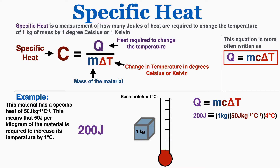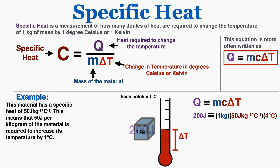If we add 200 joules to just 1 kilogram of this material, that's 4 times the heat required to change the temperature by 1 degree, so 200 joules would change the temperature by 4 degrees.